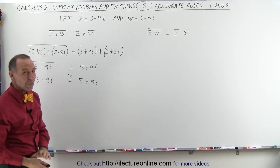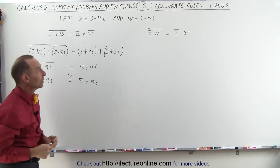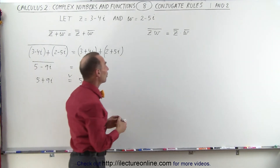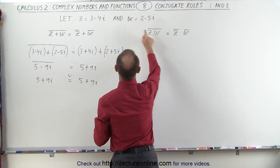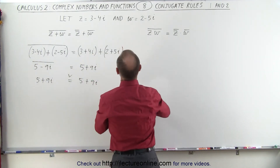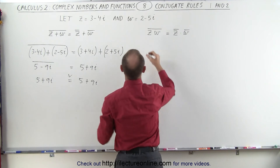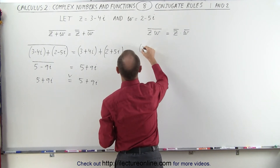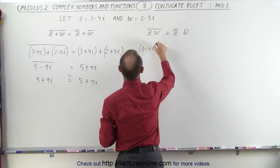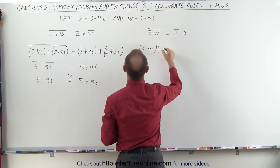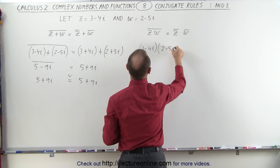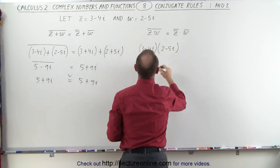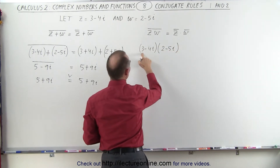What about when we multiply them together? Let's go ahead and do that. We're first going to multiply the two together. On the left side we get 3 minus 4i multiplied times 2 minus 5i.